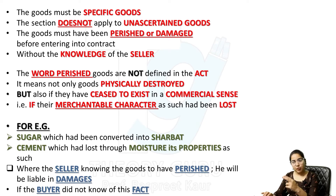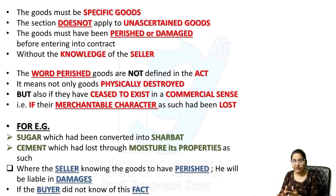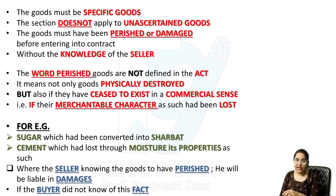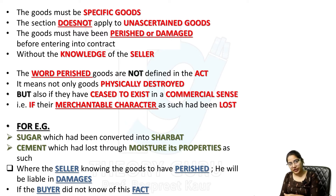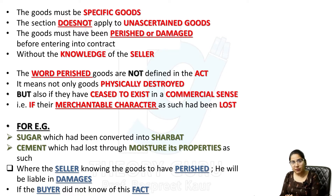एक important point: जहाँ seller knowing the goods to have perished — seller को पता था कि goods perish हो चुकी हैं या होने वाली हैं — he will be liable in damages. Buyer को नहीं पता था, seller को पता था — तो seller is liable for the damages.